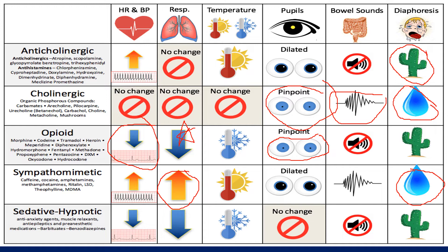And then sedative-hypnotic — this is your alcohol, benzodiazepines, Xanax, barbiturates. In general, they're going to lower everything because they're a downer as well, and these people are going to be wet. You might say this is hard to distinguish from opioids, and you'd be right. But generally, the level of respiratory depression is a little bit less than that of opioids, and you're not going to see the pupil findings like you would see in opioids.